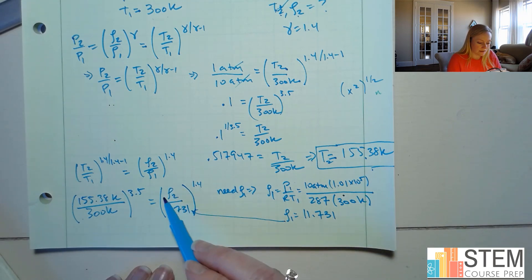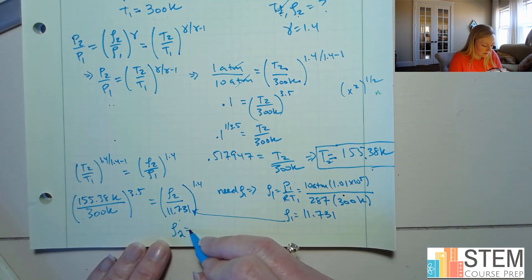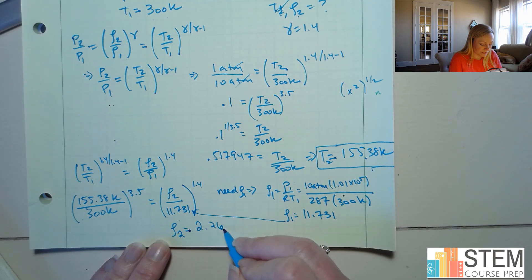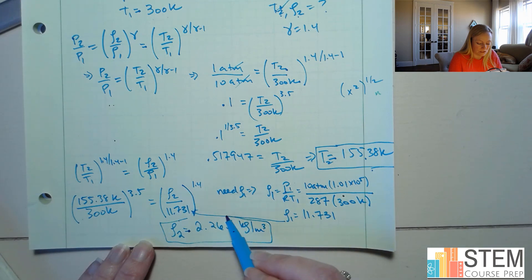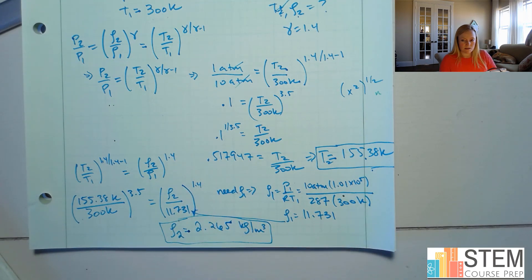So now that we did that, we just go about the algebra to get rho2, right? So once you do that, you're going to get that rho2 is 2.265 kilograms per cubic meter. Just like that.